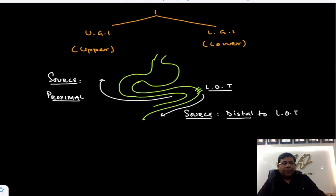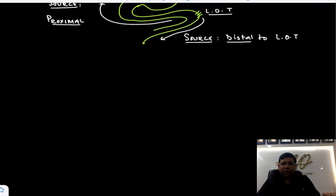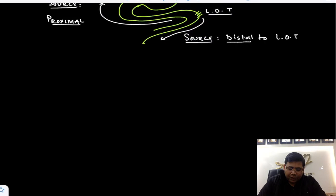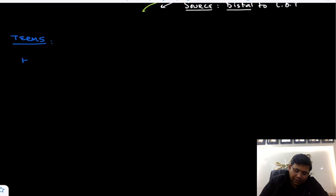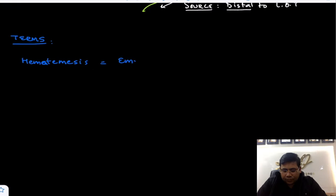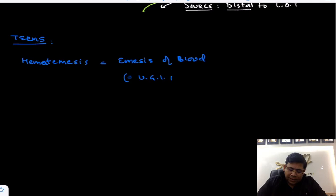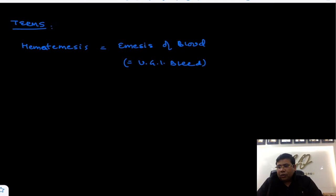Let us talk about the various terms used. The first is hematemesis — what is hematemesis? It is nothing but emesis of blood, and it is classically defined as upper GI bleed.